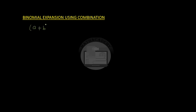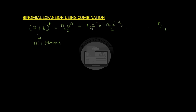So in general, for the expansion of (a+b)^n, there will be n+1 terms. The coefficients of those terms will be nC0, nC1, nC2, and so on up to nCn. The terms follow the pattern: nC0·aⁿ·b⁰ + nC1·aⁿ⁻¹·b¹ + nC2·aⁿ⁻²·b² + nC3·aⁿ⁻³·b³ + … + nCn·a⁰·bⁿ. We can expand any binomial raised to any power by using the combination formula to determine the coefficients.